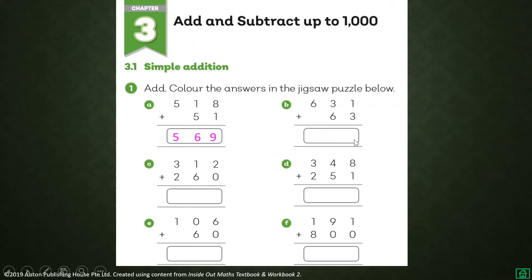Next: two plus zero equals, one plus six, and three plus two — so what is the answer? Five hundred seventy-two. Next: eight plus one, four plus five, three plus two — so what is the answer? Five hundred ninety-nine. Very good.